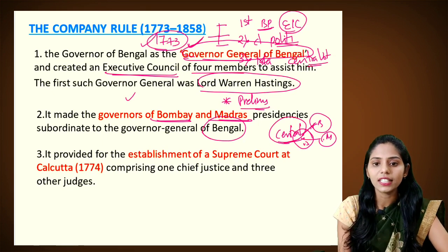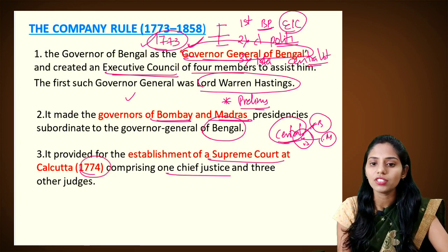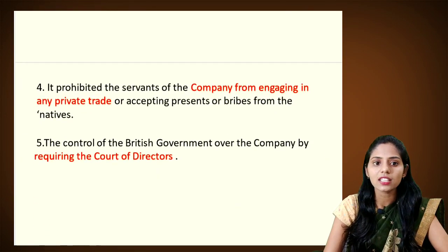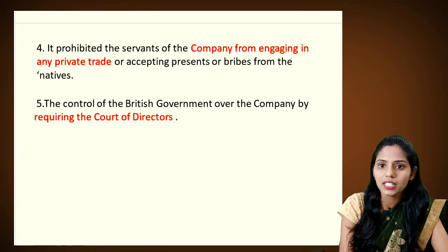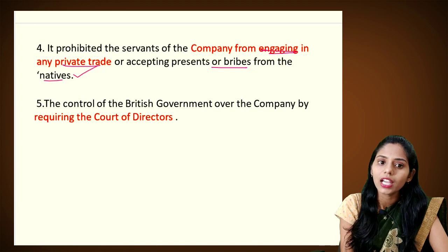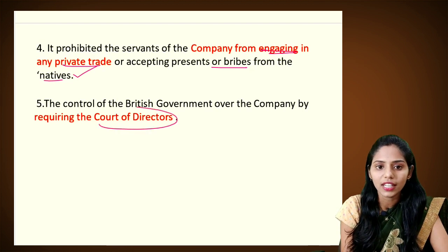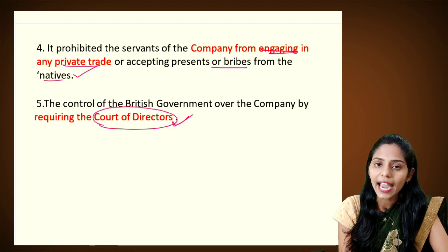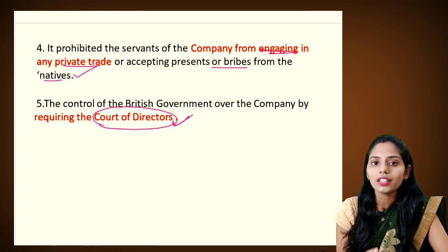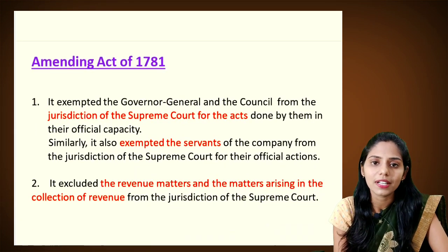The third important feature of the Regulating Act of 1773 is that it provided for the establishment of the Supreme Court at Calcutta in the year 1774, comprising one Chief Justice and three other judges. It also prohibited the servants of the company from engaging in any private trade or accepting bribes from natives. Lastly, to control the British government over the company, it came up with the Court of Directors, which would oversee the activities of the East India Company in India.